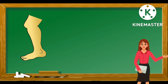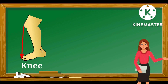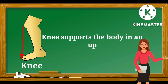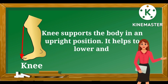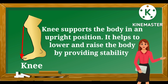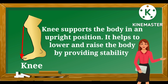This is a knee — K-N-E-E. It is the meeting point of the upper leg and the lower leg. The knee supports the body in an upright position and helps to lower and raise the body by providing stability.